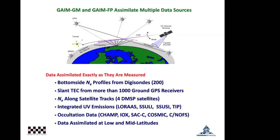Over the years, we have conducted many data assimilation runs. Both the GAME-GM and GAME Full Physics models can assimilate multiple data types as they are measured. We have assimilated bottom-side electron density profiles from approximately 200 digisonds, slant TEC from more than 1,000 ground-based GPS receivers, electron densities along satellite tracks from four DMSP satellites, integrated UV emissions from four instruments (LORAS, SULI, SUSI, and TIP), and occultation data from five satellites: CHAMP, IOX, SAC-C, COSMIC, and CNAPS. All data were assimilated at low and mid-latitudes.